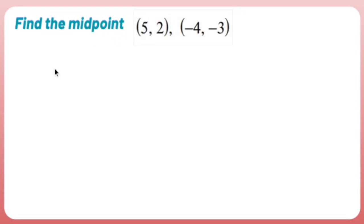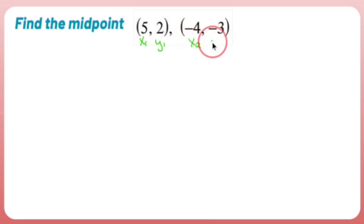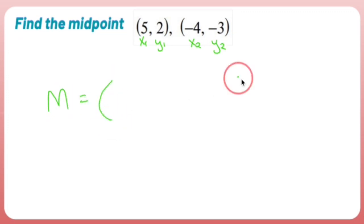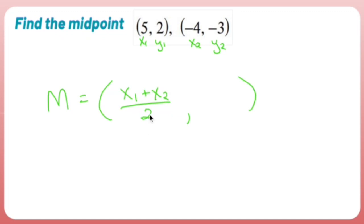Find the midpoint — no graph. Instead I have two points: (5, 2) and (-4, -3). The midpoint formula says take one point as x₁, y₁ and the other as x₂, y₂. The midpoint is: x-value = (x₁ + x₂) / 2, and y-value = (y₁ + y₂) / 2. It's essentially the average — and average means middle.